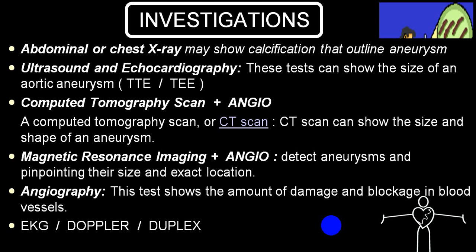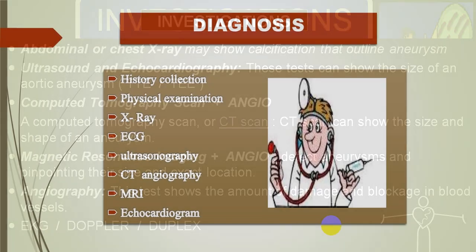EKG is not of much help, but if it shows acute MI, that is a dangerous sign. Colour Doppler or duplex Doppler can be helpful to detect dissection. The recommended workup sequence is: history, physical examination, then X-ray, ECG, ultrasound, CT or MRI angiography, and echocardiography. Echocardiography is useful for thoracic and arch of aorta aneurysms; ultrasound is helpful for abdominal aortic aneurysms. CT and MRI angiography help determine site, size, and artery involvement.